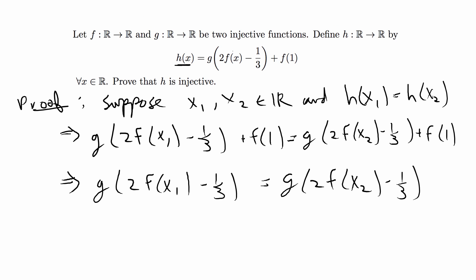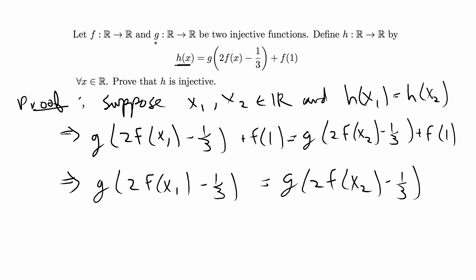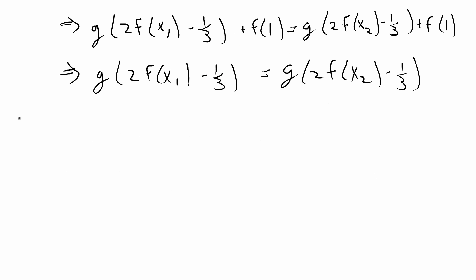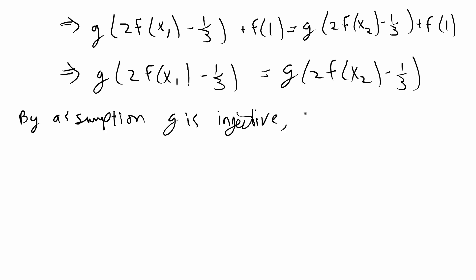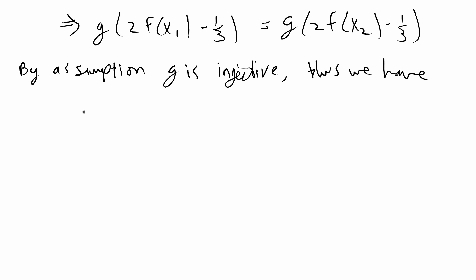Now this is the first line where we use one of our assumptions: we know that g is an injective function. So g of x1 equal to g of x2 implies x1 equals x2. By assumption, since g is injective, the insides must be equal to each other.